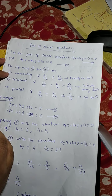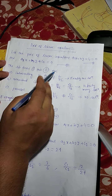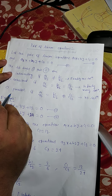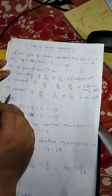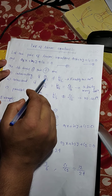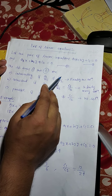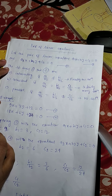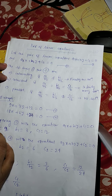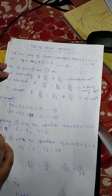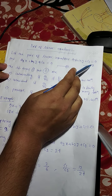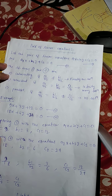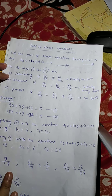Now, lines 1 and 2 are intersecting if a1 by a2 is not equal to b1 by b2. Or we can say that equations 1 and 2 have exactly one solution, that means a unique solution.